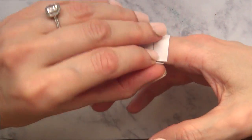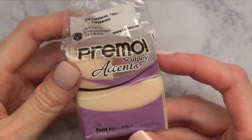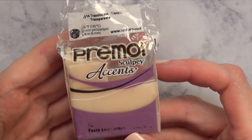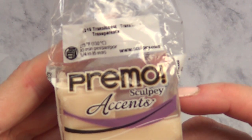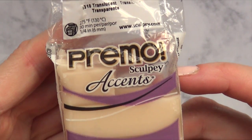To make the ring, I'm going to be using some polymer clay. This is the brand that I'm using, and I'm using translucent. I'm going to be painting this anyways, so I just prefer to use this.